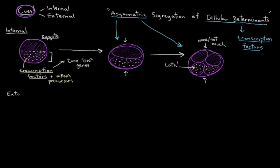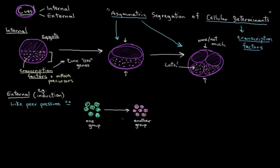But the second way to specialization that I'll mention is called inductive signaling or just induction. And induction is kind of like really strong encouragement, almost like peer pressure, where one cell, or actually usually a group of cells, can induce another group of cells to differentiate by just using some signals.